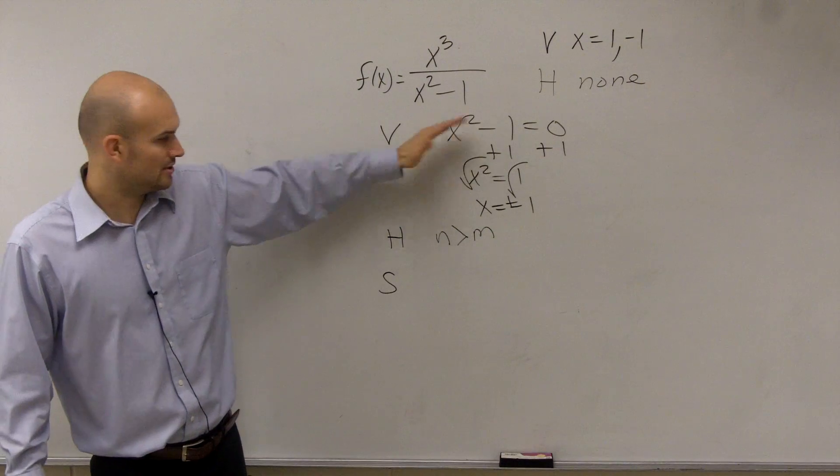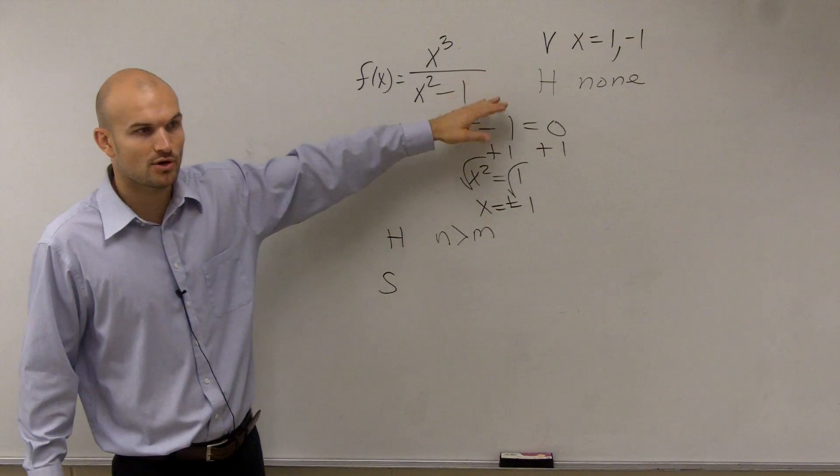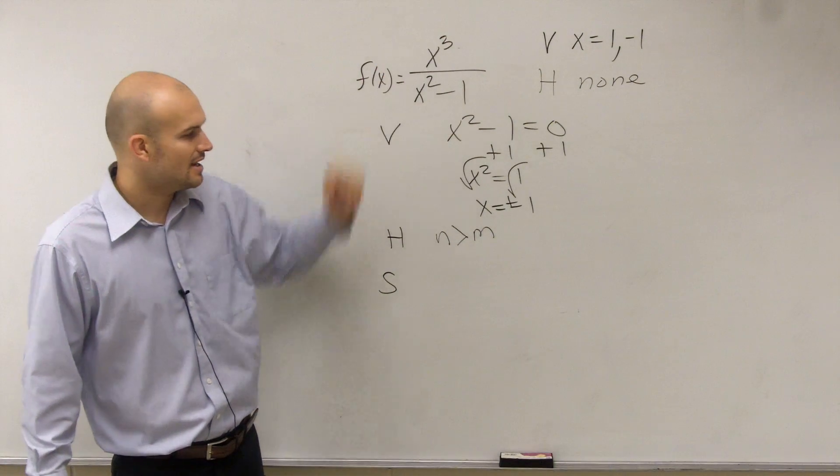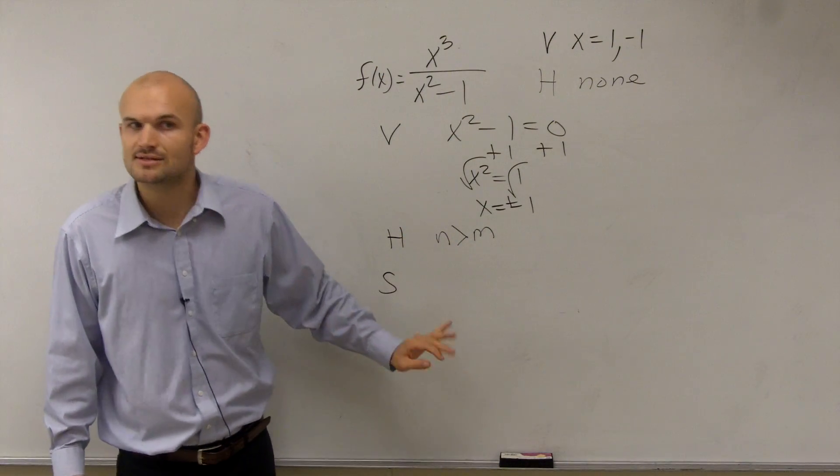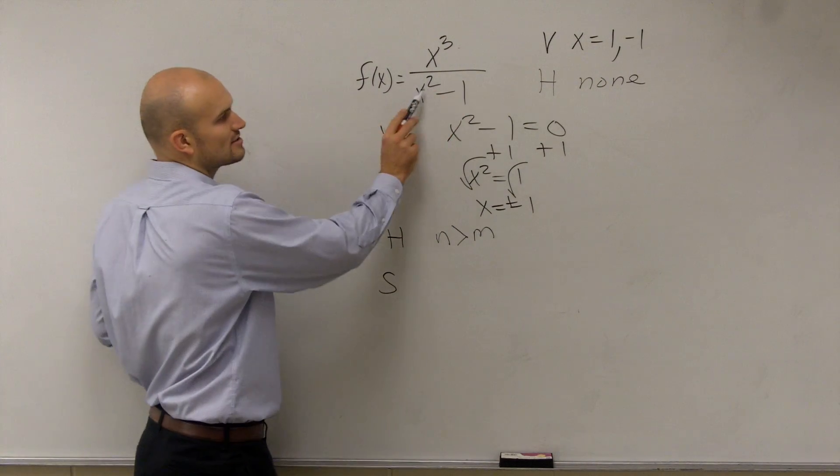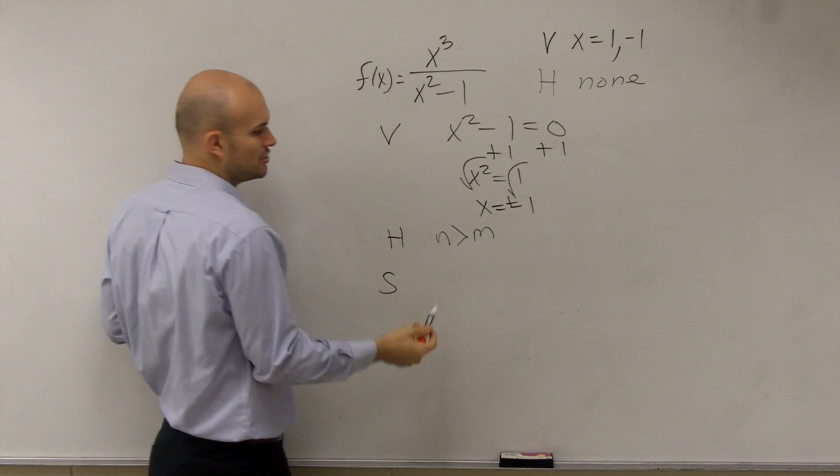Vertical, set the denominator equal to zero. Horizontal, you have three options. Take a look at the exponents or the degrees, and then you can determine. If you do not have a horizontal, then you're going to have a slant. So to find the slants, since this is a smaller degree, we need to divide it into our numerator.